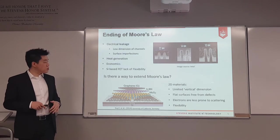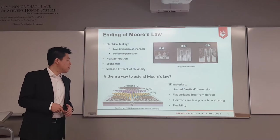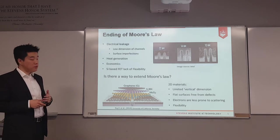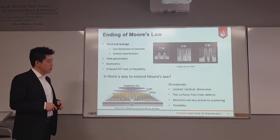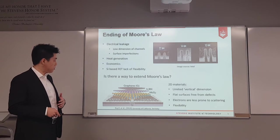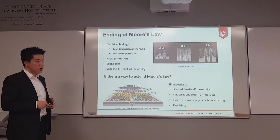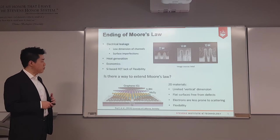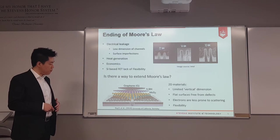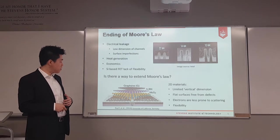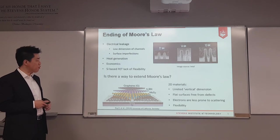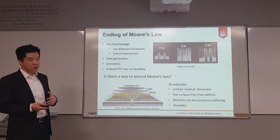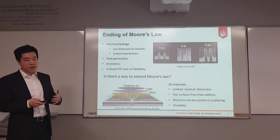2D materials have limited vertical dimension and can be fabricated with flat surfaces free from defects, so electrons are less prone to scattering. Also, 2D materials are flexible. Here is a field effect transistor based on all 2D materials, fabricated by researchers from the University of California Berkeley. In this case, silicon and silicon dioxide serve only as supporting material and can be replaced by other materials.